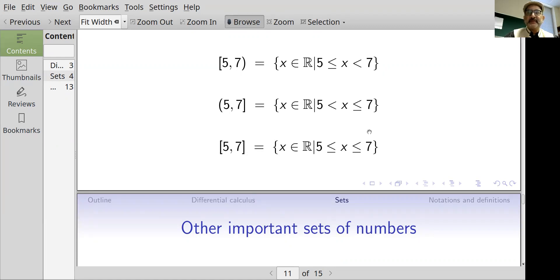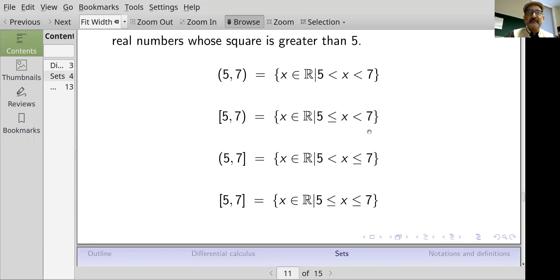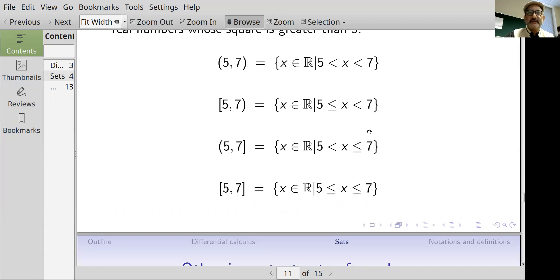If I write (5, 7] with first a round bracket and then a square bracket, that means those real numbers which lie between 5 and 7 not including 5 and including 7. And if I have [5, 7] with two square brackets, that means the numbers between 5 and 7 which include 5 and which also include 7. That first example with two round brackets is called an open interval and the second example with two square brackets is called a closed interval.